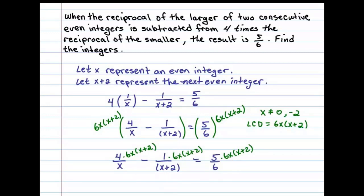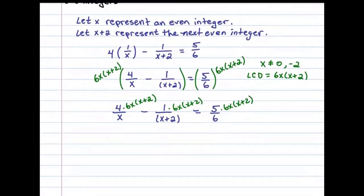The first term, the x cancels, and that'll leave us with 24(x+2) minus—the x+2 cancel—so minus 6x will be equal to 5x(x+2).